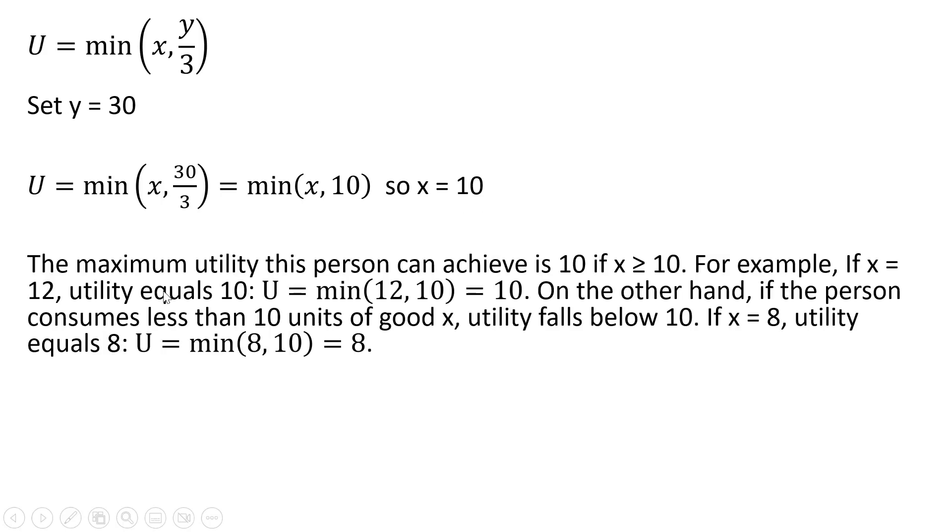The maximum utility this person can achieve is 10, if x is greater than or equal to 10. For example, if x equals 12, utility will still equal 10. Utility will be the minimum of 12 or 10, which is 10, the smaller number.